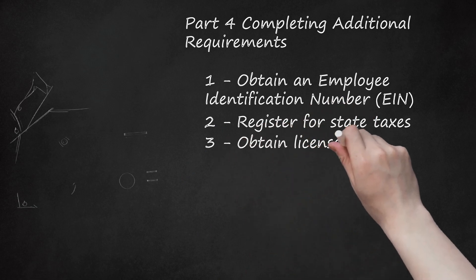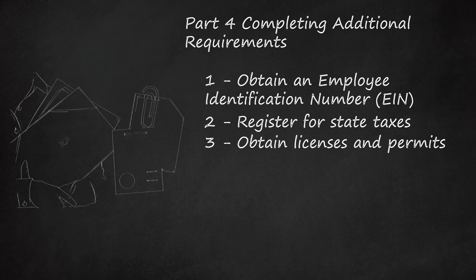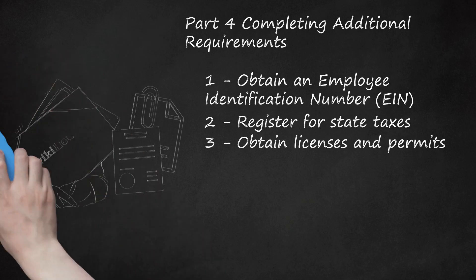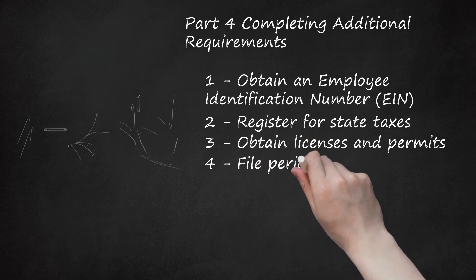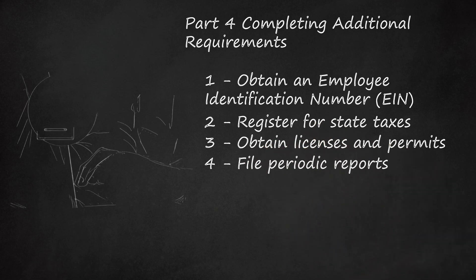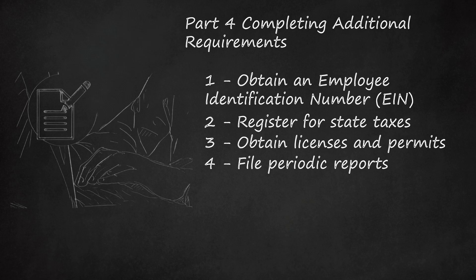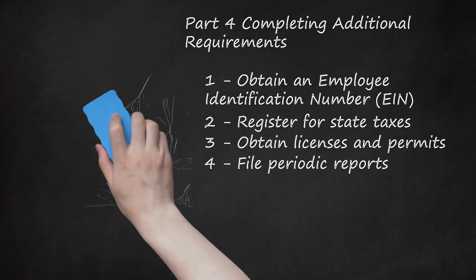Obtain Licenses and Permits. Most cities and counties will require you to file for and obtain certain licenses and permits in order to do business. These permits and licenses may include parking and fire safety. Contact the Business Licensing Section of your city government to determine what needs to be done. File Periodic Reports. Every so often, you will have to file updates with the Secretary of State regarding your business. In California, these documents are called statements of information. They will usually need to be filed either every year or every two years. You can usually file these reports online, but sometimes you may be required to mail them or submit them in person.